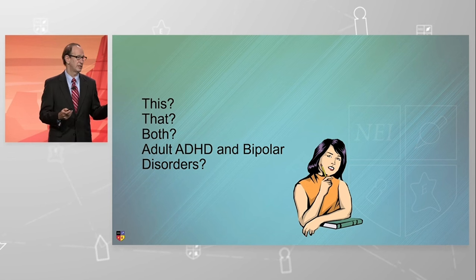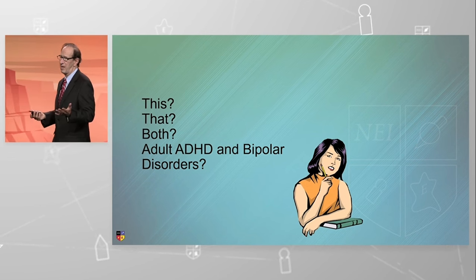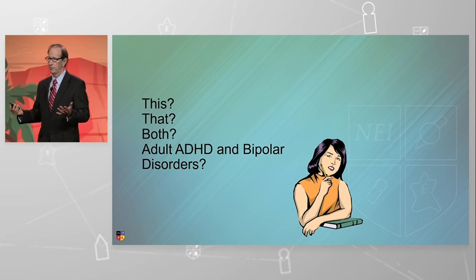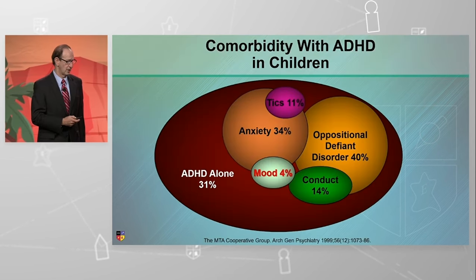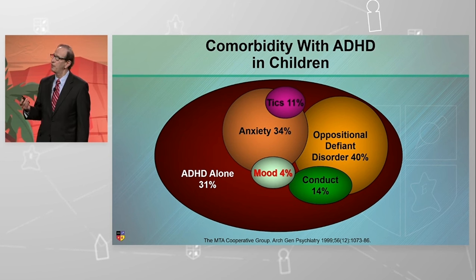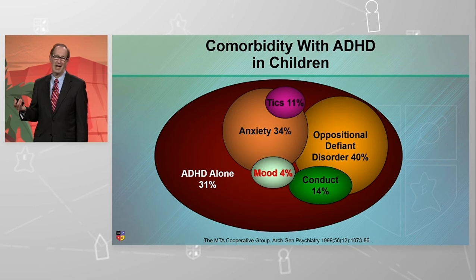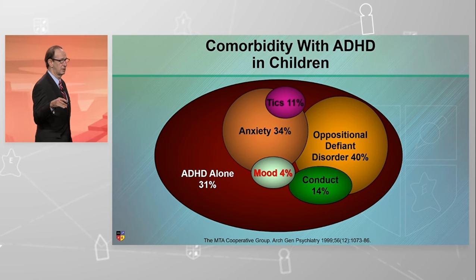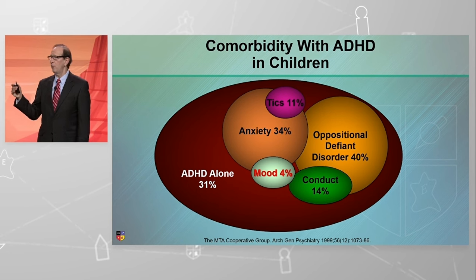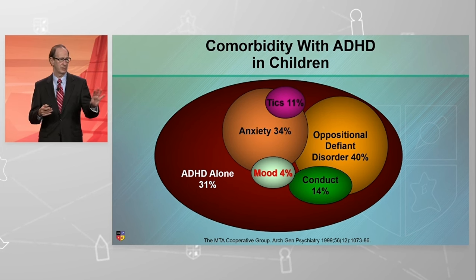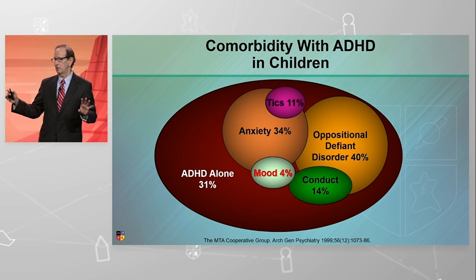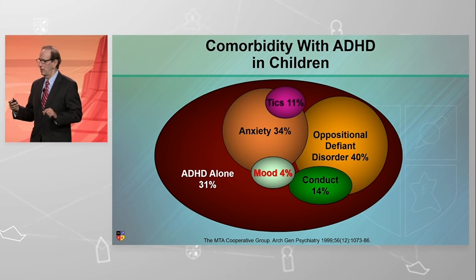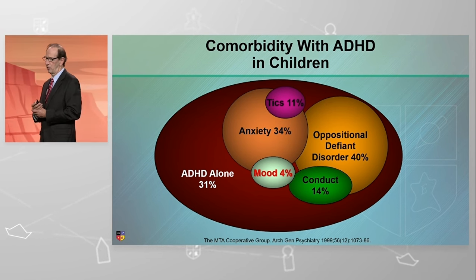Is this a binary decision — either this or that? And how do you sort out if it's both? That's where the rubber meets the road. This is comorbidity data for children with ADHD. Only 30% of ADHD children don't have another psychiatric disorder, meaning 70% do. And before you pat yourself on the back for making a diagnosis of ADHD, if you haven't walked through the other possible concurrent disorders, you've only cooked the pie halfway. Your treatment, as a result, is probably going to be less effective.